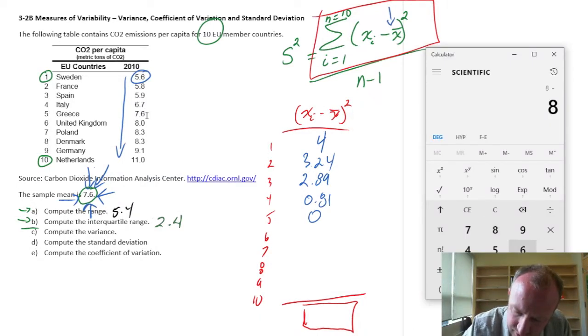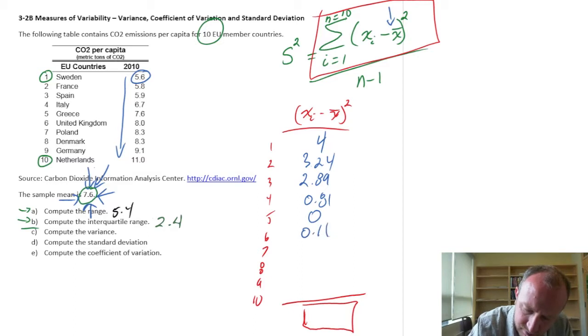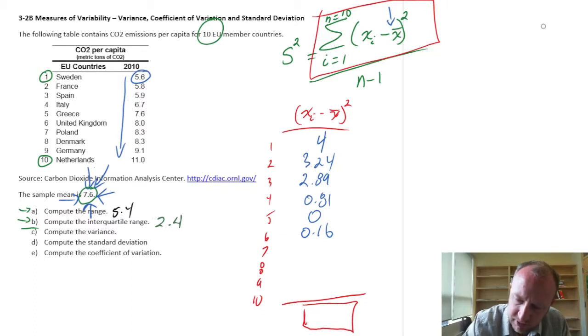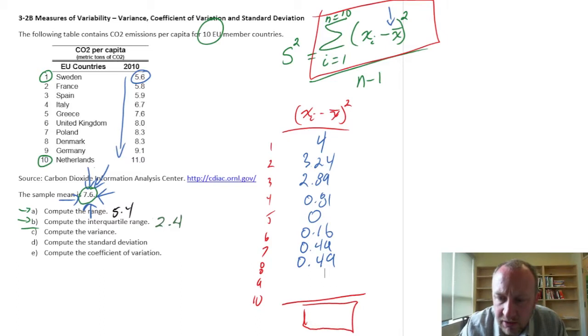Okay, I'm at 6.7 here, 6.7 minus 7.6, 0.81. 7.6, so while I can do that one in my head, that one's going to be 0. 8.3 minus 7.6 squared, so 0.49, and this one I've got twice, so I can just skip. Poland and Denmark are the same, and now we just have two more.